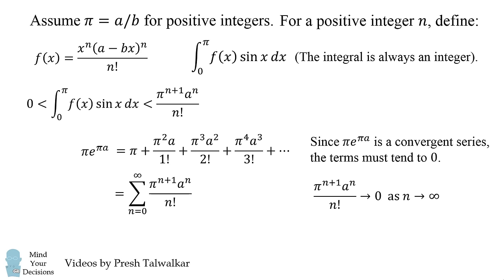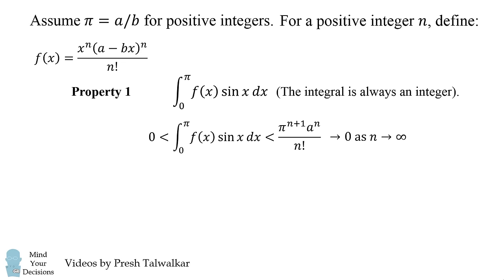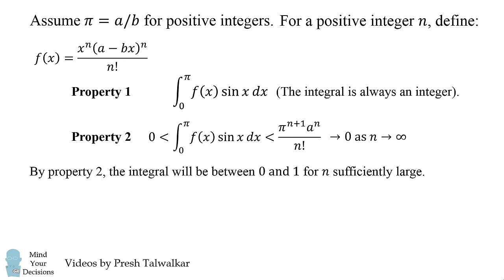So we've now established property 1 and property 2. So let's put these two together. Property 2 states the integral will be between 0 and 1 for n sufficiently large, and this contradicts property 1 that the integral is always an integer. We therefore can conclude our original premise was wrong, which means pi has to be irrational.